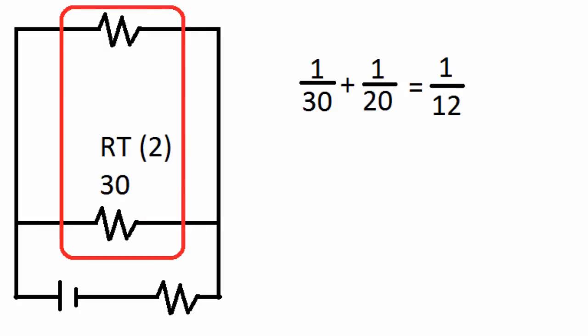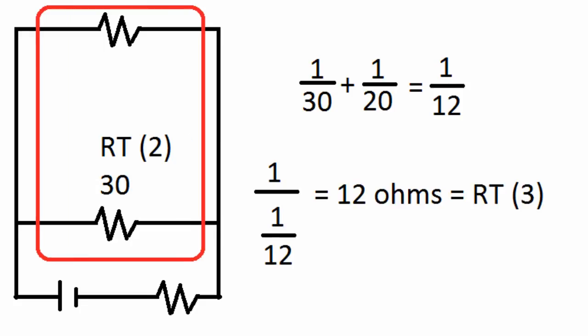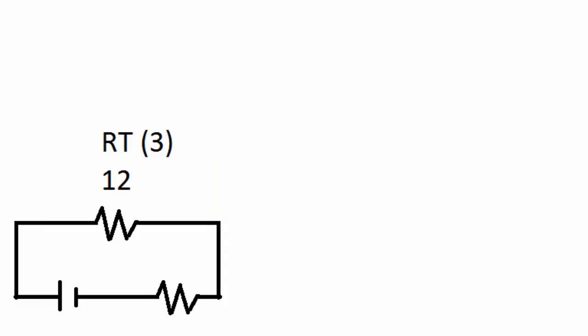Now we're going to condense the 20 ohms resistor at the top with RT2 of 30 ohms and these two are in parallel. So we take 1 over 30 plus 1 over 20 and this equals 1 over 12. So now we take 1 over 1 over 12 and this gives us 12 ohms for RT3.